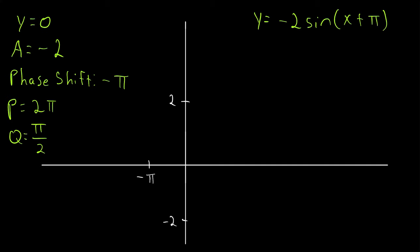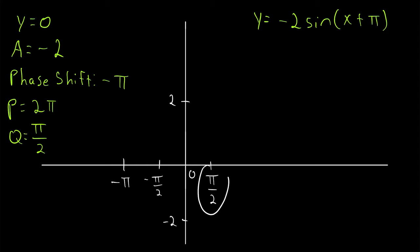With the phase shift placed, we find the x-coordinates of each subsequent key point by repeatedly adding a quarter period of pi over 2. From negative pi we get negative pi over 2, then 0, then pi over 2, then pi. Those are our five x-coordinates for one complete period of the function.